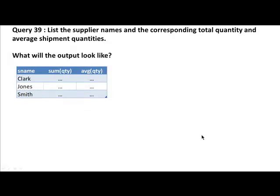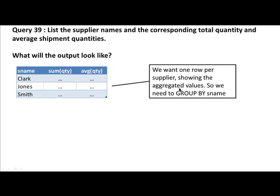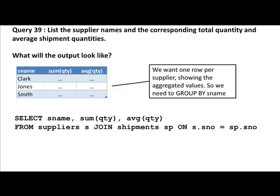The output is going to have one row for every supplier with columns for total quantity shipped and average quantity shipped. We need to group by supplier name since we want one row per supplier. The query is: SELECT supplier_name, SUM(quantity), AVG(quantity) FROM suppliers s JOIN shipments sp ON s.s_number = sp.s_number GROUP BY supplier_name. You have aggregates and non-aggregates in the SELECT clause, so you must GROUP BY the non-aggregates.